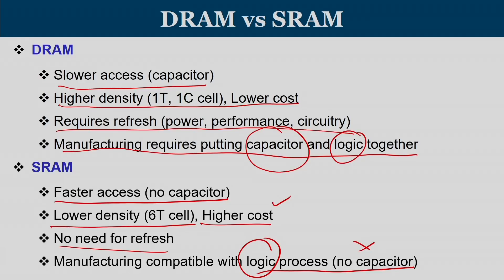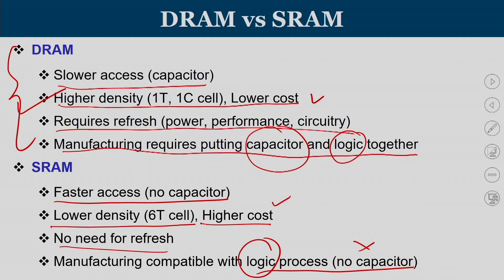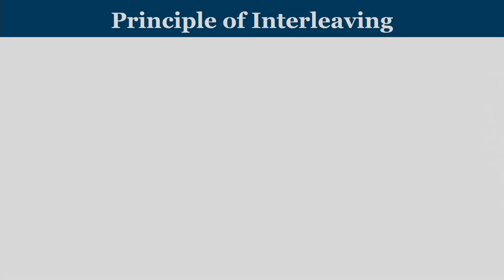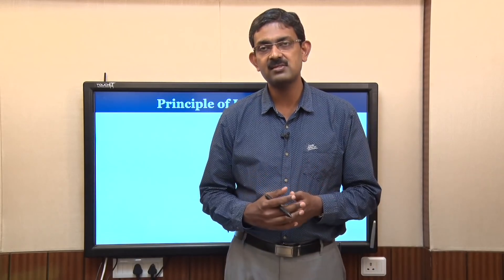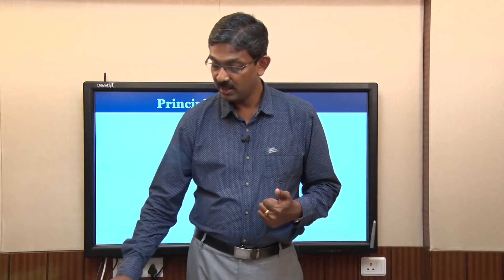Because of the higher density of DRAM, it is used for main memory — which must be really large, on the order of gigabytes, while the chip remains small enough to fit on the motherboard. The high density makes DRAM built with capacitors and transistors the right choice. DRAM is used to implement the primary memory of current-day processors. Now let us understand the principle of interleaving and why we need it before designing a DRAM system.